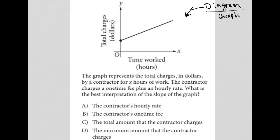Let's take a look at the graph and then read the question. On the x-axis, I have time worked. On the y-axis, I have total charges. We can see by the direction of this line that the more time worked, as you go to the right on the x-axis, the higher the total charges go.